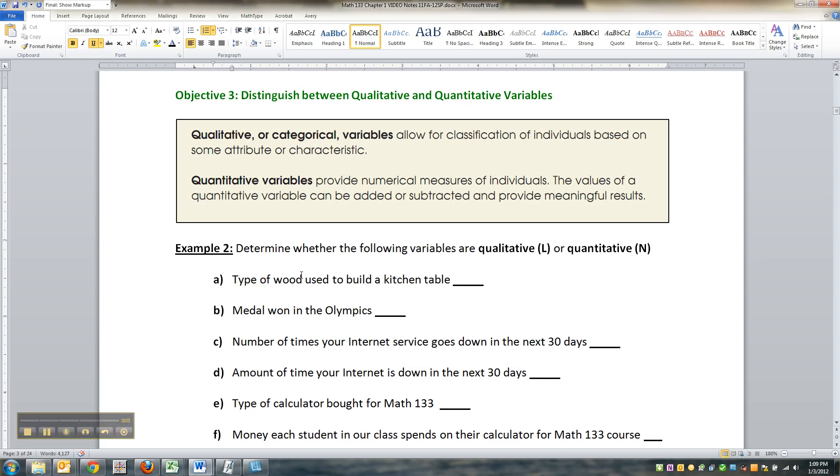Alright, so let's get into qualitative versus quantitative variables. Qualitative variables allow for classification of individuals based on an attribute. Quantitative variables are numerical measures, and their values can be added or subtracted to provide meaningful results.